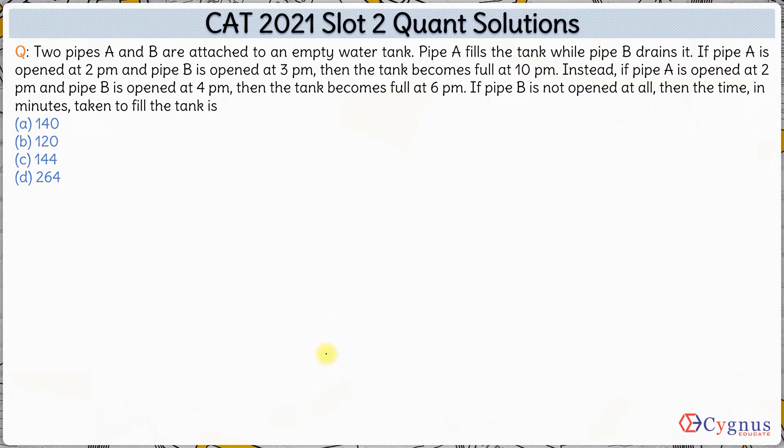Okay, so here in this question we have two pipes A and B. They are attached to an empty water tank. Pipe A fills the tank while pipe B drains it. So A is filling and pipe B is draining.